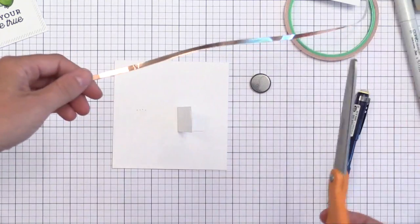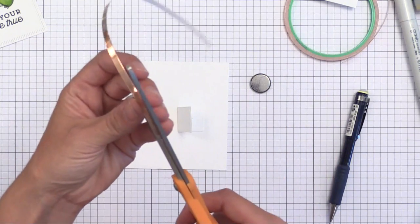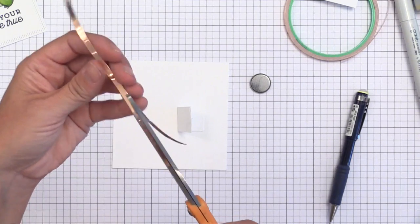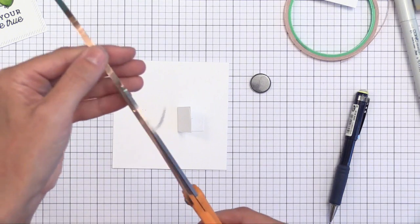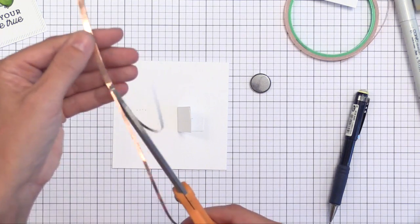Now for the fun part. We get to create the circuit. That sounds a little scary, but I promise it's easy because all you have to do is put down some tape. As crafters we can handle that. All we have to do is put down copper tape to create a circuit from the light to the battery.